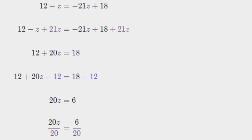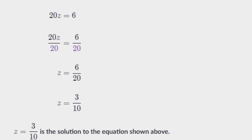Now we need to remove 12 from the left hand side. So we subtract 12 from both sides: 12 plus 20Z minus 12 equals 18 minus 12. The 12s cancel out, and 18 minus 12 equals 6, leaving 20Z equals 6. We divide both sides by 20: Z equals 6 divided by 20. In simplest terms, Z equals 3/10. Therefore Z equals 3/10 is the solution of the equation.